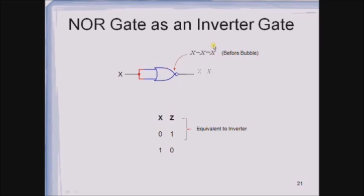This is how we are going to implement an inverter gate with the help of a NOR gate. This NOR gate has two inputs but they are tied together and given as one input, X. Therefore, the output is Z equals X̄. This output expression as well as the truth table resembles exactly the inverter gate. This is the symbol used for representing the inverter with the help of a NOR gate.